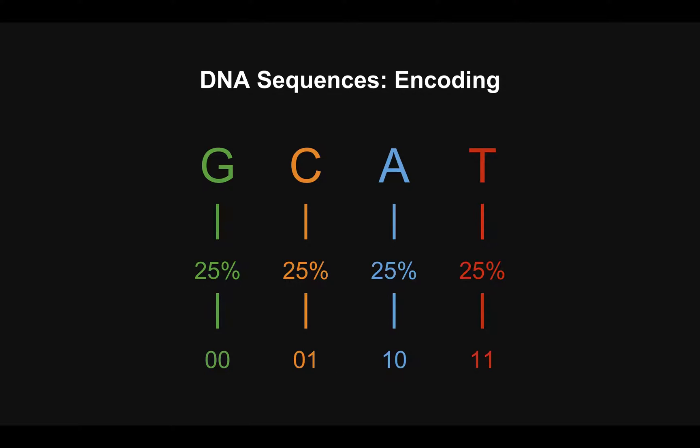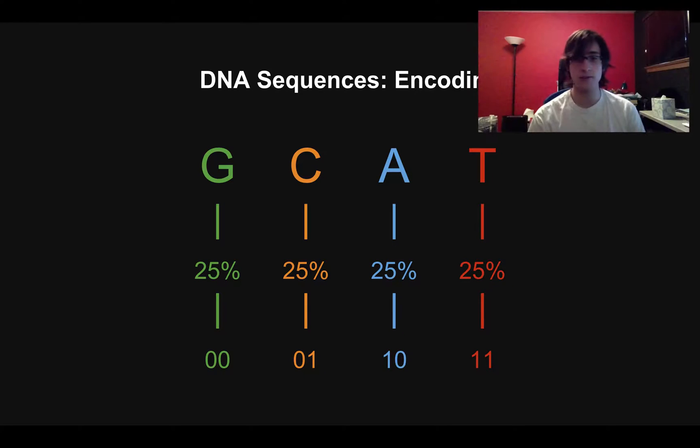One way to do this is to just assign two bits, like a two-digit sequence, to each letter. So for G, I would have 0, 0. For C, I could have 0, 1, etc. I chose this randomly. You can assign whichever two-bit sequence you want to whichever letter, but the key is there's four different ways you can combine two bits, and I'm assigning one of those to each letter.